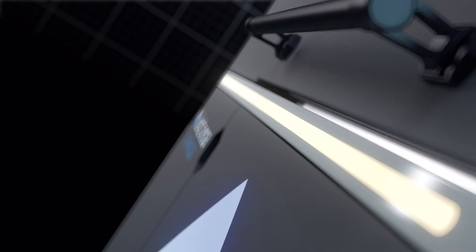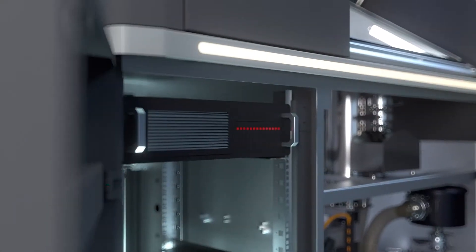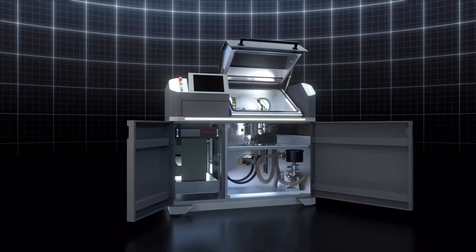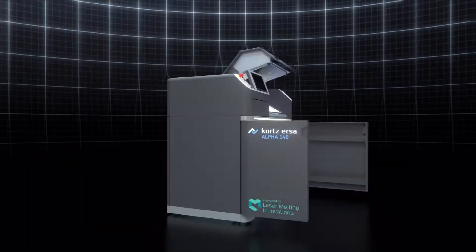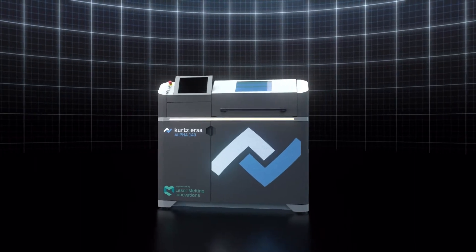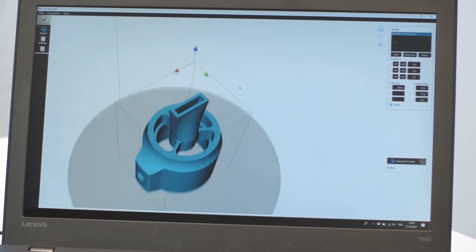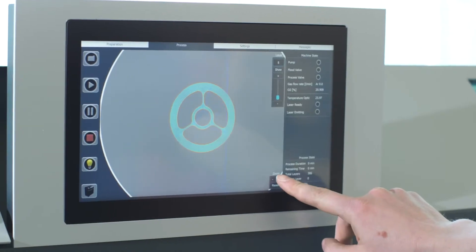The future of metal processing will be changed by 3D printing. With its Alpha 140, Kurtz-Ersa makes it child's play. Smart technology, professional industry quality, as well as a compact footprint – these are the characteristics of the Alpha 140.